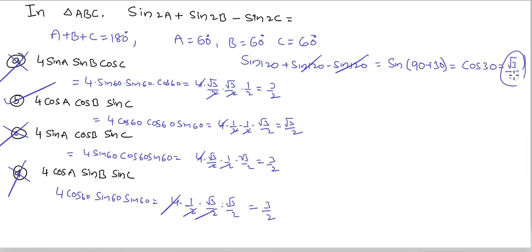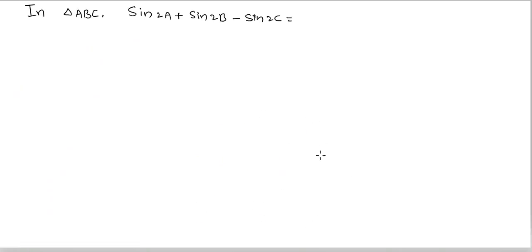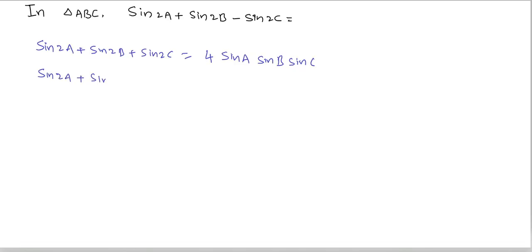Second trick: In triangle ABC, sin2A + sin2B + sin2C = 4sinA sinB sinC. And sin2A + sin2B - sin2C — here the minus is for angle C — equals 4cosA cosB sinC.